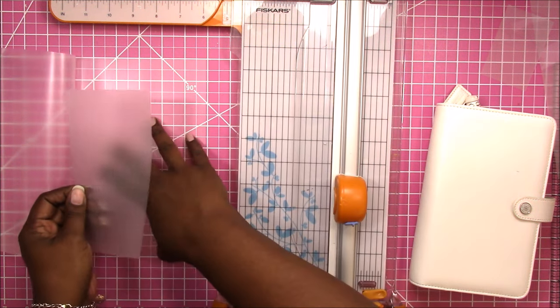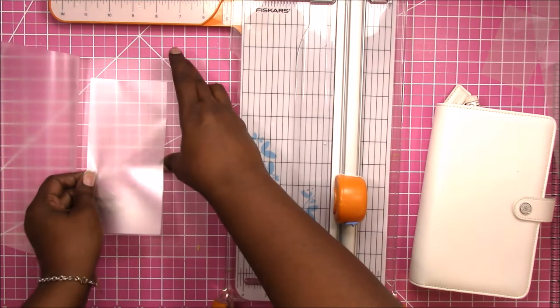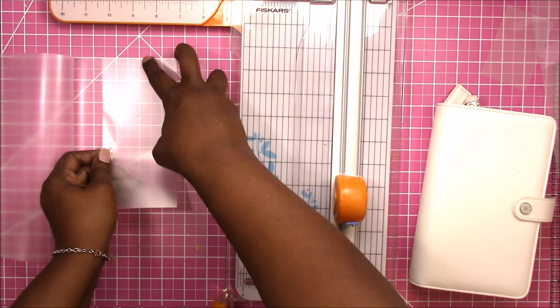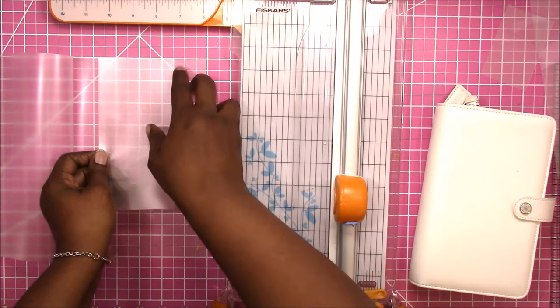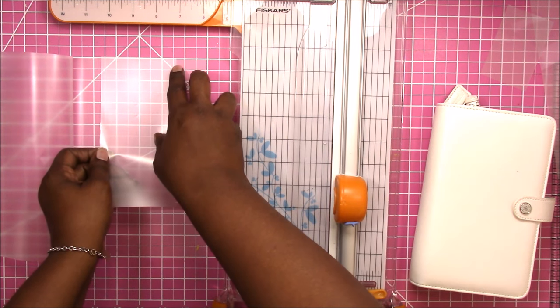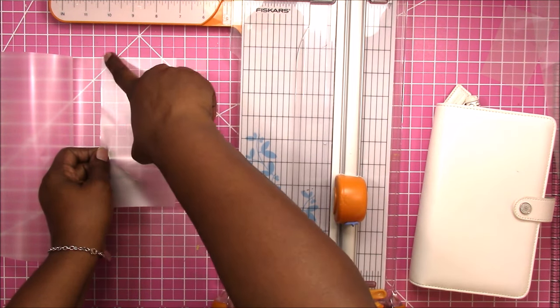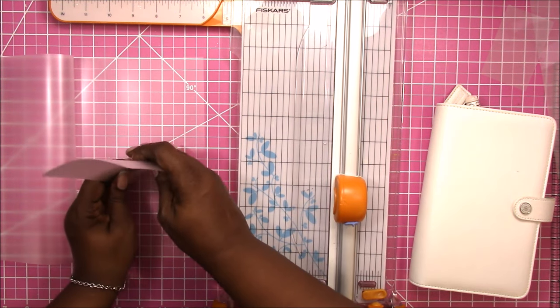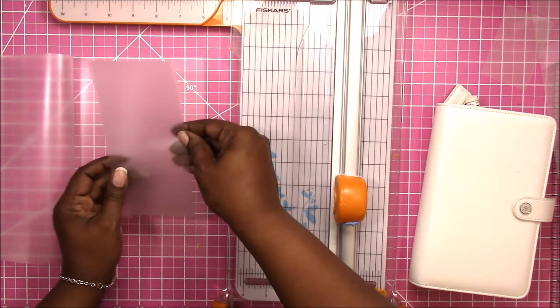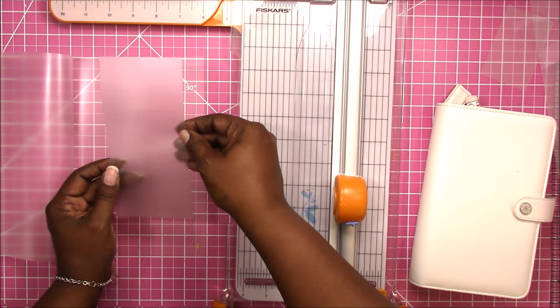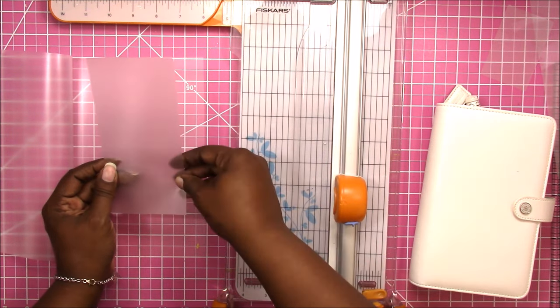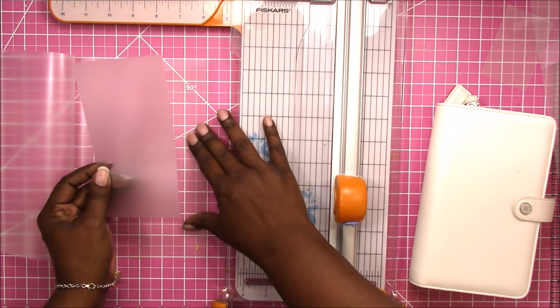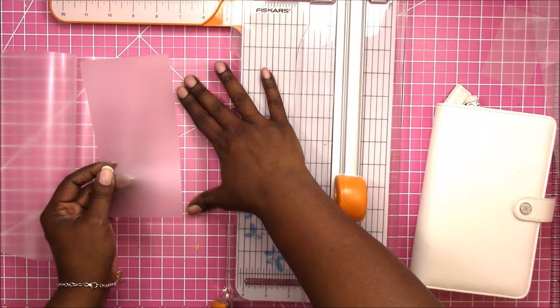And if you line everything up as you go, it's easier to trim because you already have everything pretty much squared to start off with. Someone also asked the question, could you just put the pouch all the way to the top edge and laminate it that way so that you don't have to trim that off at the top once it's laminated?